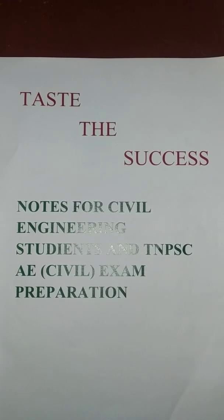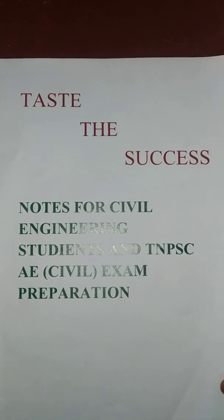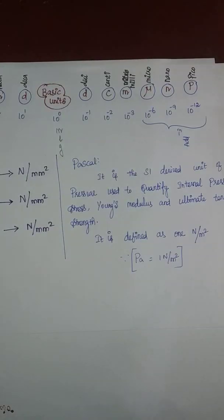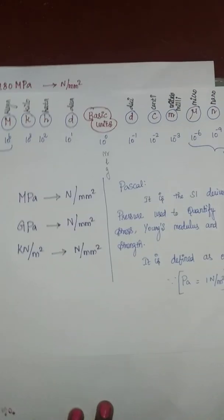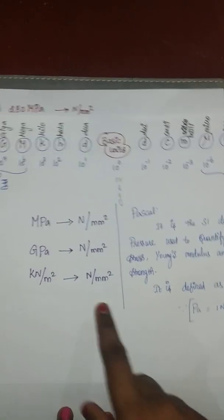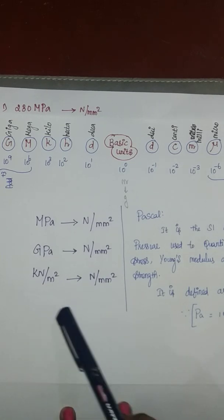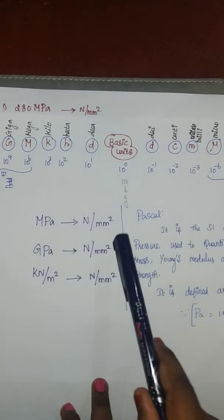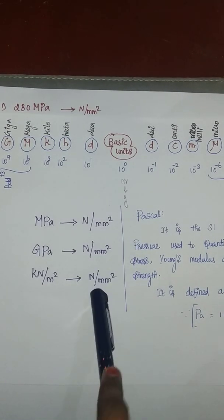Hey guys, welcome back to my channel, Tasty Success. We have basic units of megapascal, gigapascal, kilonewton per meter square, and newton per mm square — how can you convert them?